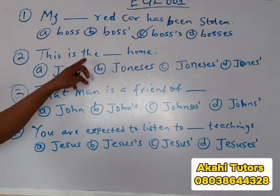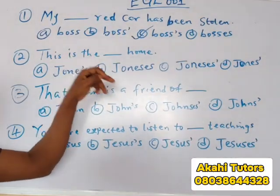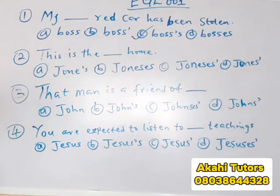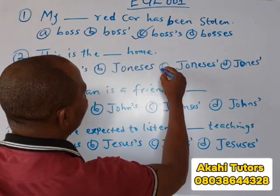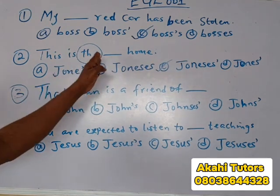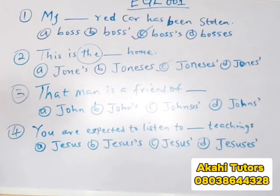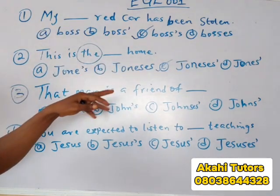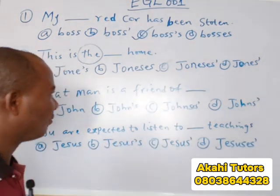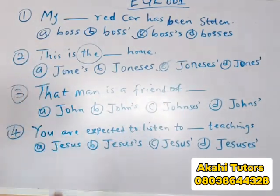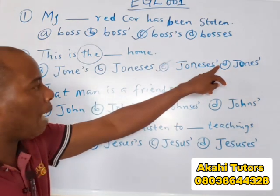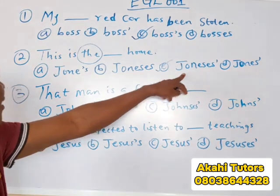Question two: this is the blank home. The options are: Jones, Joneses, Joneses', and Jones' home. Our answer is also option C. This is because when a definite article is placed before a noun or a family name, you put the apostrophe sign only without S to indicate plurality. Also, this option has two syllables, and when you have two syllables, you put the apostrophe without S. So our correct answer is option C.